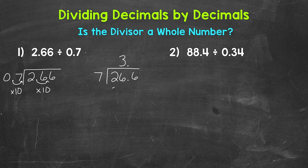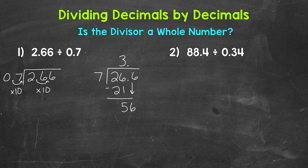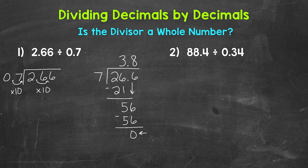Now we multiply: 3 times 7 is 21. Subtract: 26 minus 21 gives us 5. Bring down — now we have 56, and we repeat, going back to divide. We have 56 divided by 7 — how many whole groups of 7 in 56? Well, 8 — that hits 56 exactly. Multiply: 8 times 7 is 56. Subtract: 56 minus 56 is 0. We went all the way to the right within our dividend, so we have our final answer: 3 and 8 tenths.